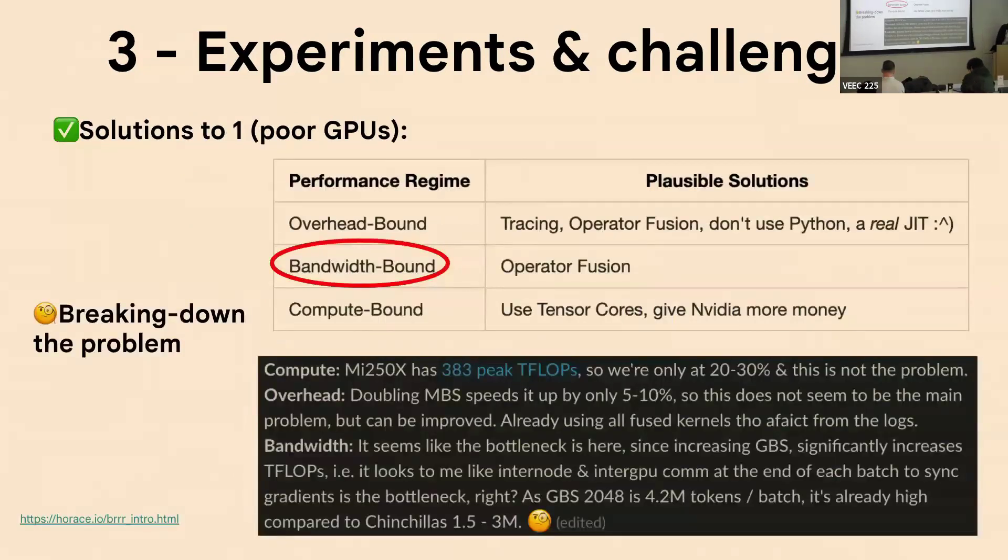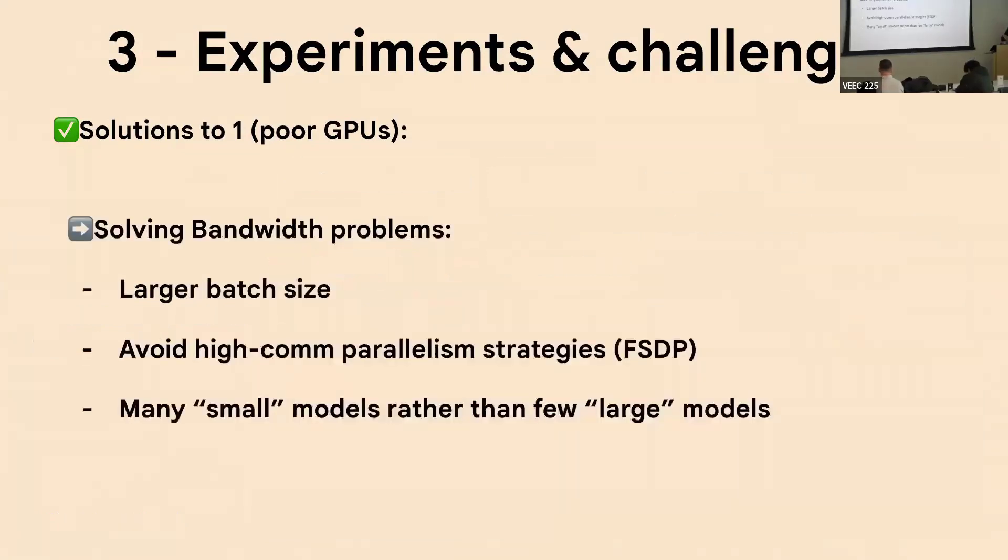The solution for this is breaking down the problem into why exactly are we dropping off a cliff. There's this great blog post that goes into detail. In our case, with the Lumi compute cluster, we were definitely bandwidth bound. So the communication was really poor because there's no InfiniBand across AMD nodes. So instead, we have to figure out how are we going to solve this poor communication problem.